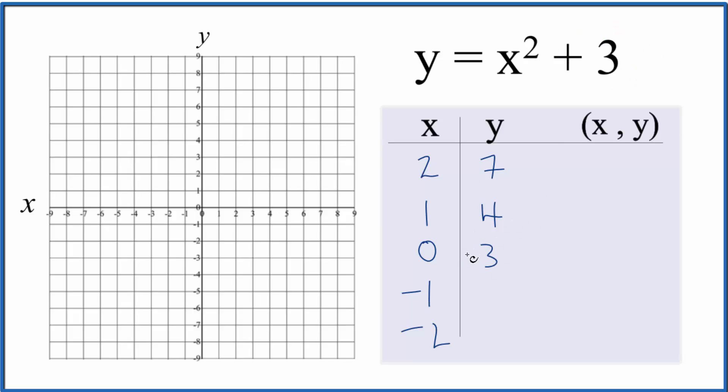Negative 1, we multiply negative 1 by negative 1, we get positive 1. So 1 plus 3 is 4. If we put negative 2, negative 2 squared is 4 plus 3, that gives us 7.